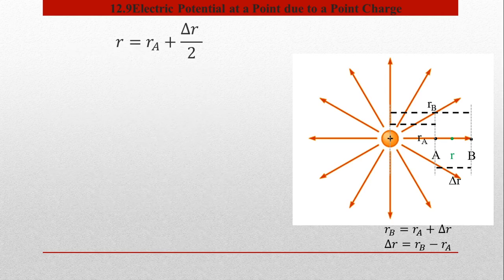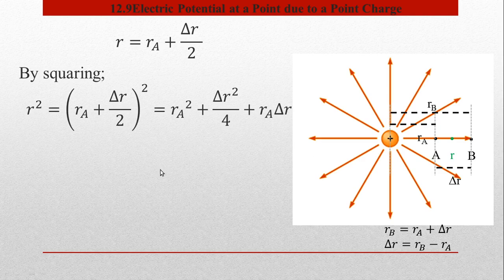اب ہم اس expression کو square کریں گے تاکہ R² کی value نکال کر اسے electric field میں substitute کر سکیں۔ Square کرنے کے لیے (A+B)² کا formula use ہوگا: first term کا square، plus second term کا square، plus 2 into first into second term۔ چونکہ second term میں already divided by 2 تھا، اس لیے formula کا 2 اور وہ 2 cancel out ہو جائیں گے، اور کچھ اس طرح کی terms بنیں گی۔